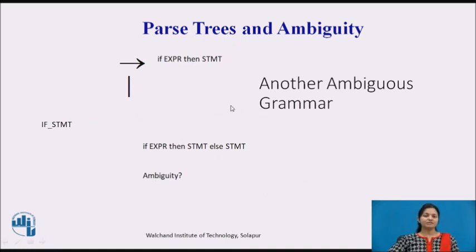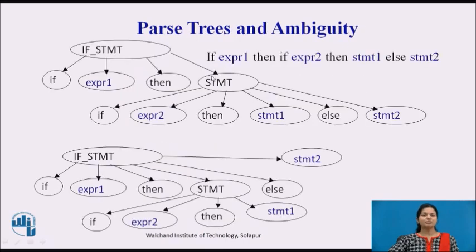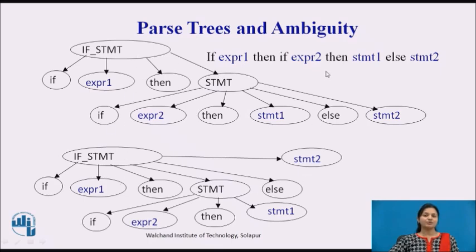One more example of ambiguity occurs in language constructs — specifically when using if-expressions in statements, which may create ambiguity. For example: if expression1 then expression2 then statement1 else statement2. Sometimes the else is not mentioned every time, and that produces ambiguous grammar or ambiguous meaning. We can see two parse trees for one if-statement, so this is an ambiguous grammar and needs to be corrected.